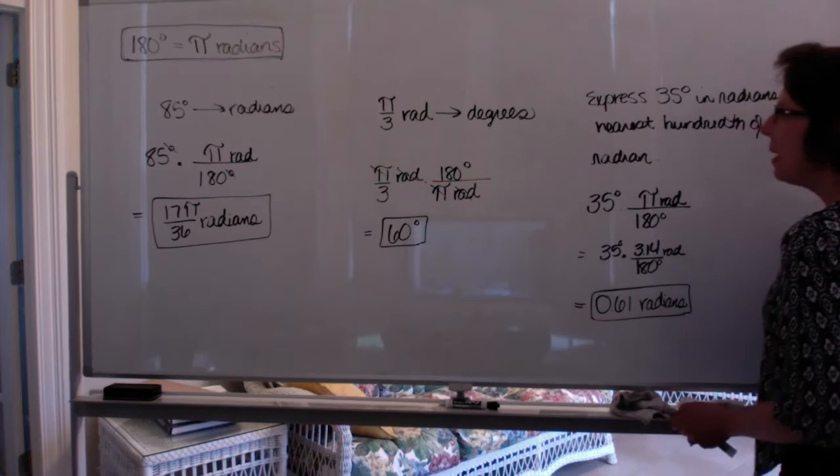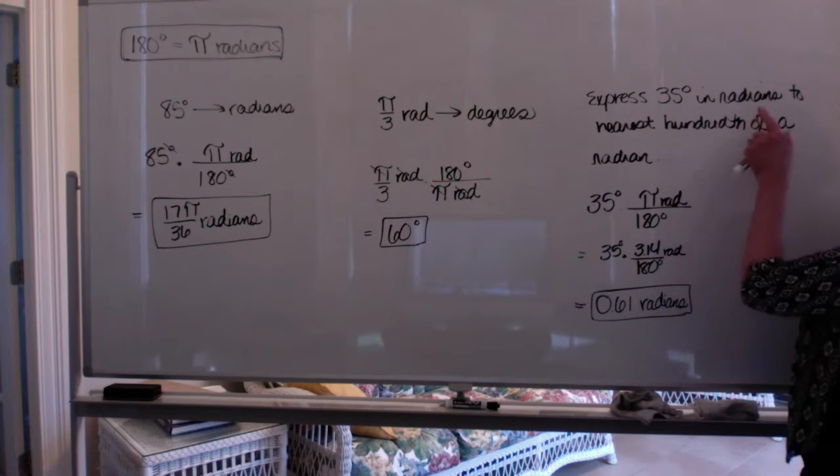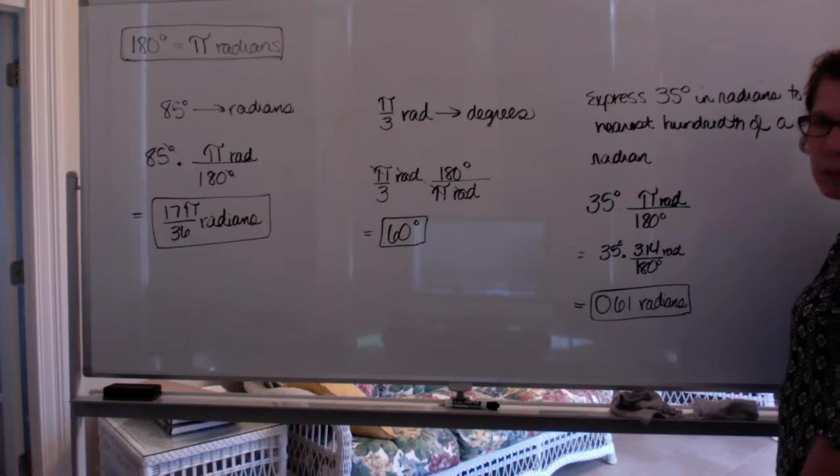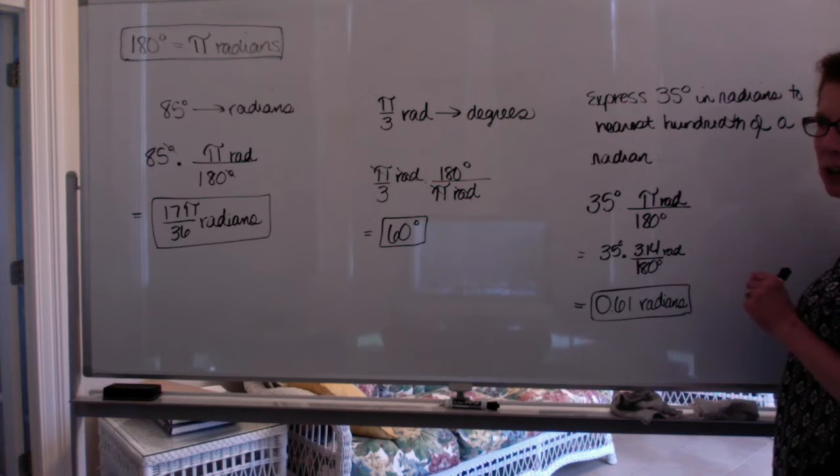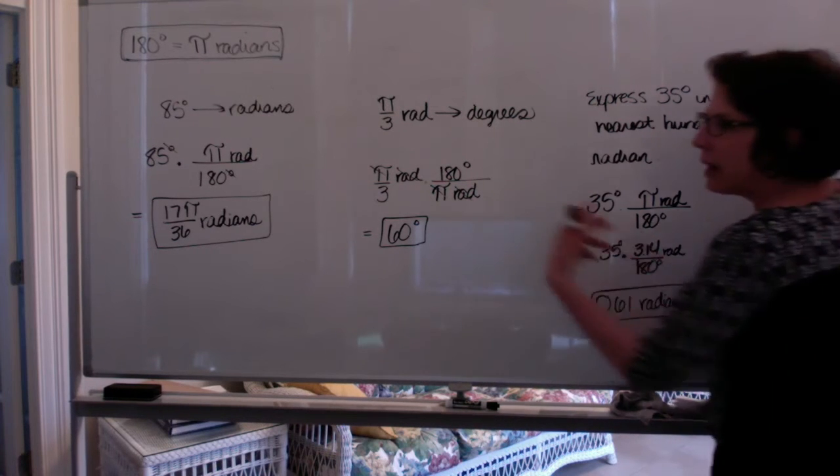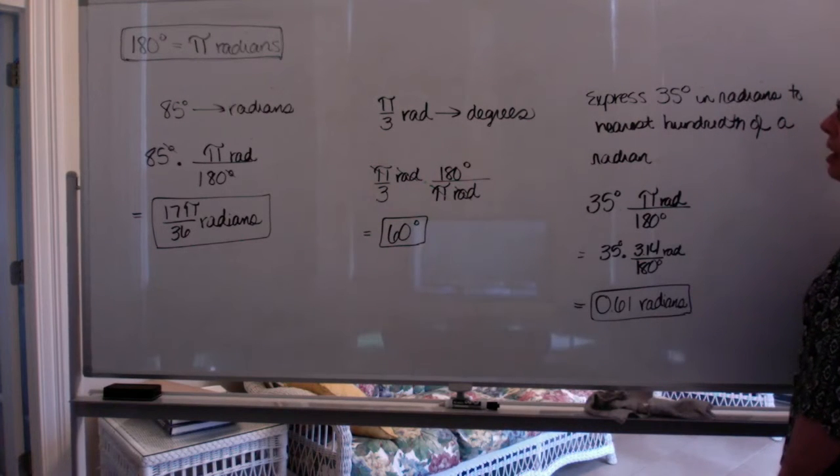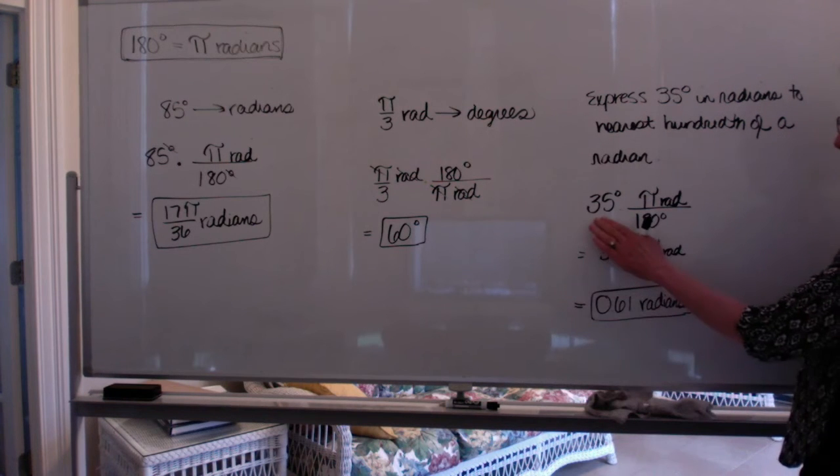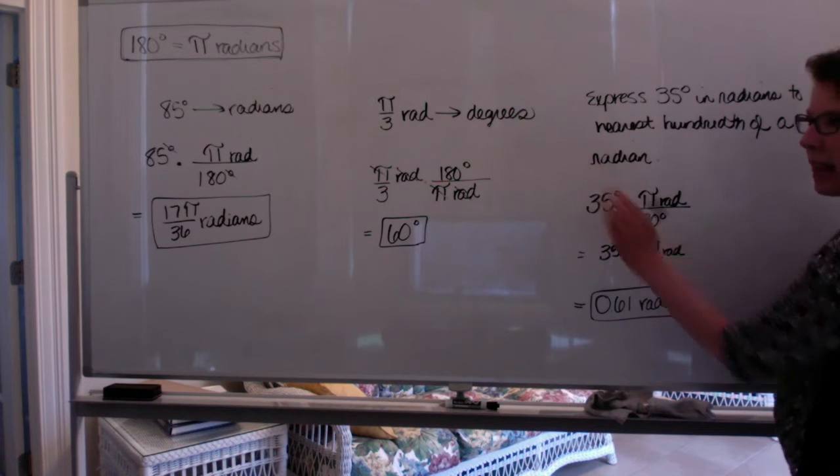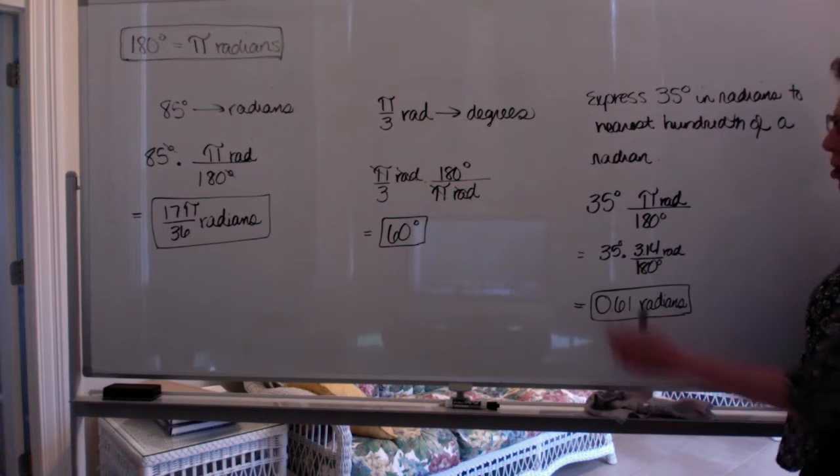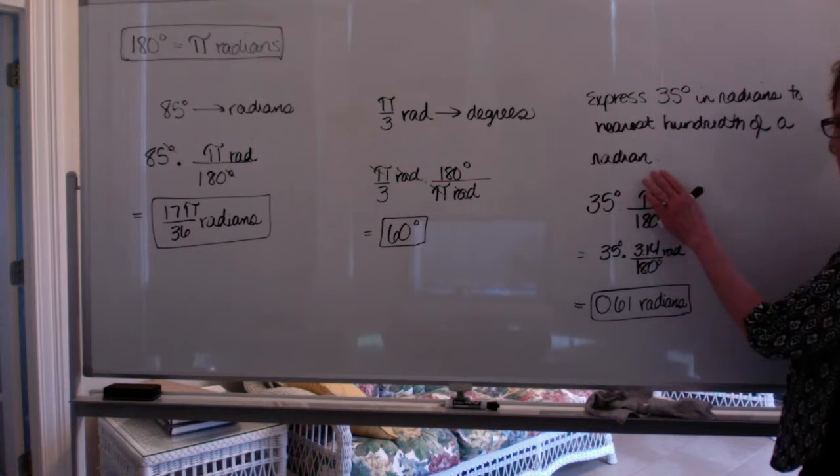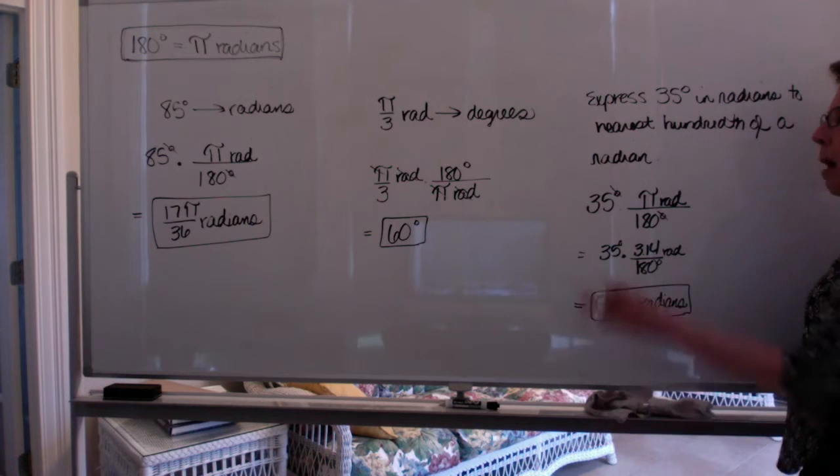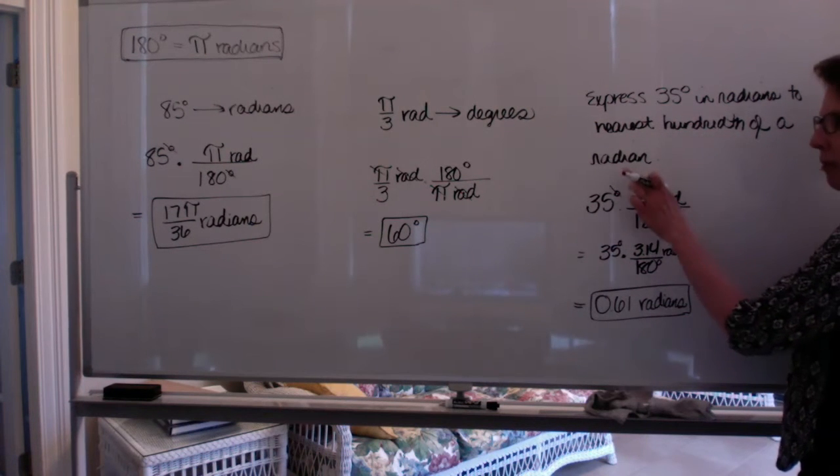Okay. Now let's express 35 degrees in radians, but this time we're going to put our answer to the nearest hundredth of a radian. Now this is going to be in the homework tonight. So watch the directions carefully. Sometimes you'll leave your answer with pi in it. Other times they will tell you to go ahead and give a decimal answer. So we want to go from degrees to radians. So I'm going to set this one up just like I did with the first problem. I'm going to go ahead and start with 35 degrees and multiply by pi radians over 180 degrees. So my degree units will cancel out.